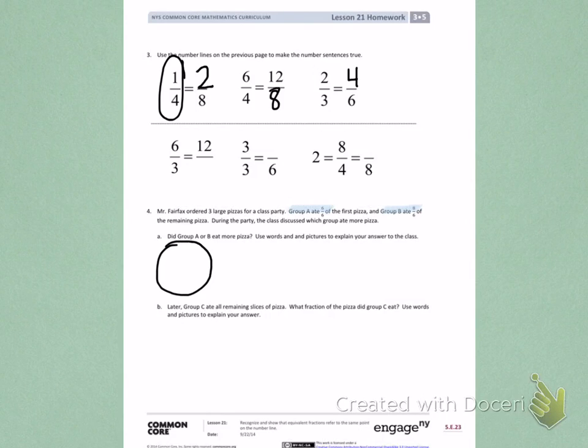Here is group A's pizza. I'm going to draw that group A ate 6 sixths of the pizza. I'm going to shade 1 sixth, 2 sixths, 3 sixths, 4 sixths, 5 sixths, and 6 sixths. That shows me what group A ate.